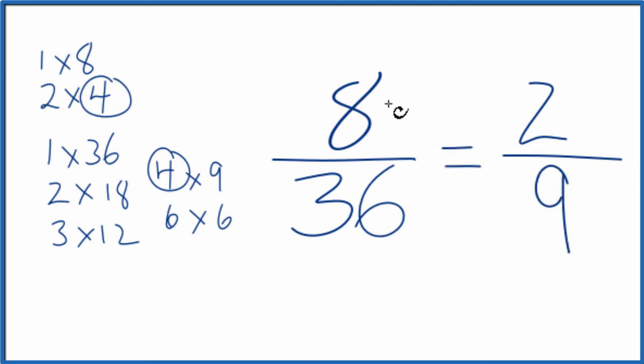So we've simplified 8/36 down to 2/9, and we can't reduce or simplify this any further. It's in lowest terms. These are equivalent fractions, 8 divided by 36 and 2 divided by 9. You'll get the same number. It's just that we've simplified or reduced 8 over 36 down to 2 over 9.